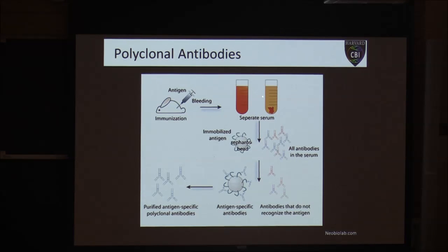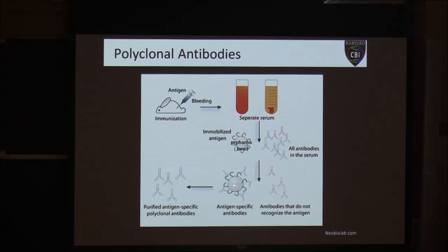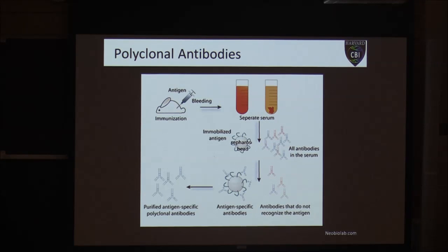We mix this serum with Sepharose beads that have the immobilized antigen bound to their surface — the same antigen injected into the animal. Only antibodies that recognize that antigen will bind to the bead. We spin this down, separate the beads from the rest of the serum, and purify those antibodies off the bead. What we have now is a collection of antibodies that all recognize the same target, but each one is a little different — they recognize different regions of that antigen.